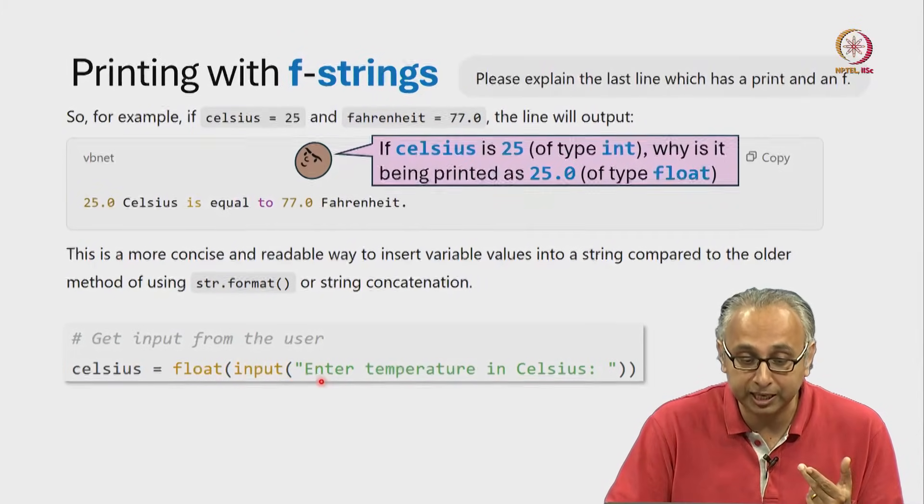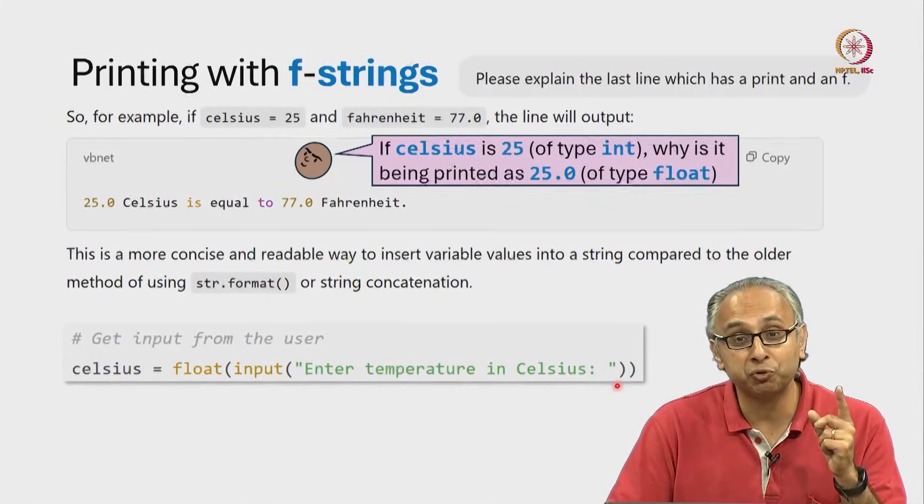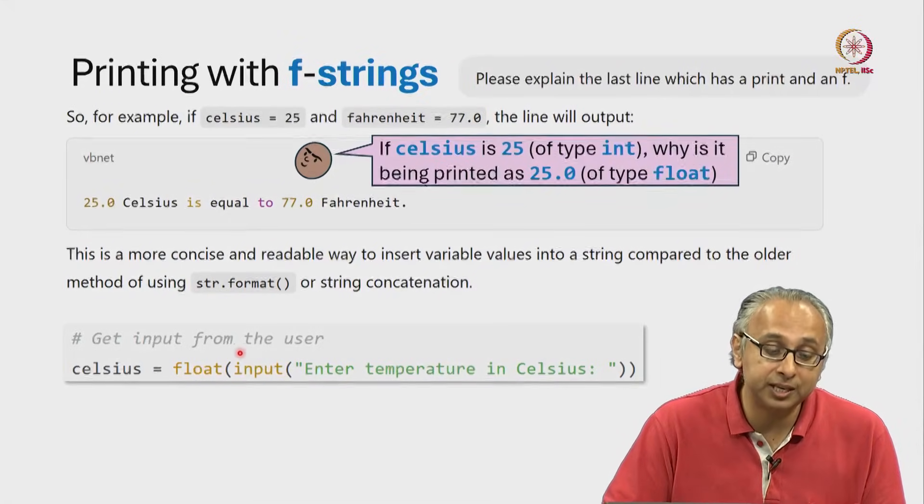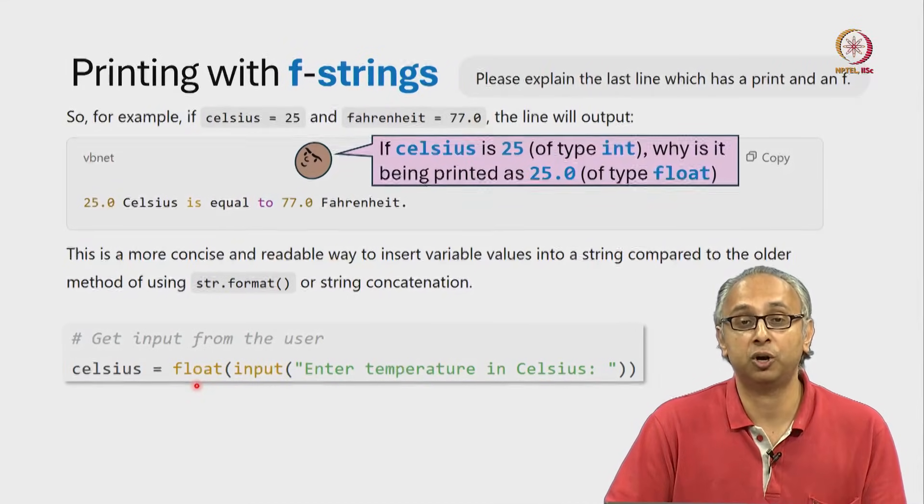And that string is converted into a float. So, Celsius is actually assigned to a float object. So, the error in this AI generated explanation is this.